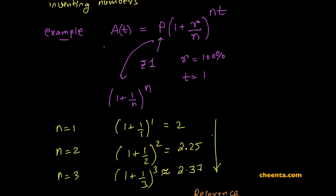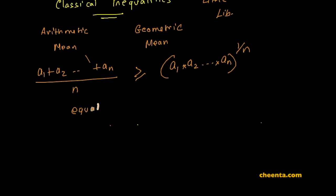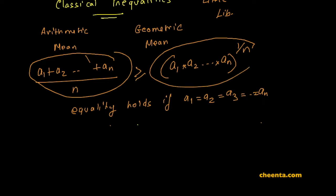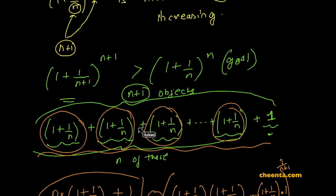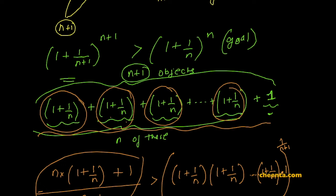Equality holds in the AM-GM inequality only if a1 = a2 = a3 = ... = an — if everything is equal. Otherwise, the left-hand side is strictly greater than the right-hand side. Here, n of the terms are equal but there is one extra 1, which is certainly not equal to (1 + 1/n). Hence, strict inequality holds.